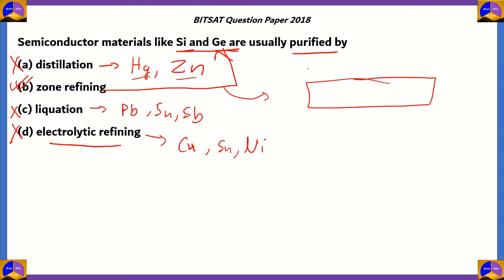In zone refining, you have a rod of silicon and you heat a particular portion. As you move the heater away, the metal solidifies faster than the impurities, forming pure crystals at one end while impurities are carried to the other end. By repeatedly sweeping the heater, all impurities accumulate at one end which can then be cut off. Therefore option B is correct for semiconductor materials like silicon and germanium.